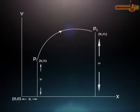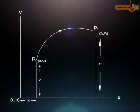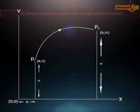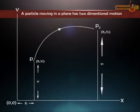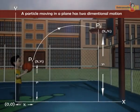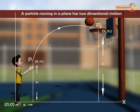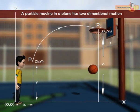A motion in which two out of three coordinates change with time is called two-dimensional motion. Here, the ball moves from position P1 (x1, y1) to position P2 (x2, y2) along a curved path. A particle moving in a plane has two-dimensional motion.